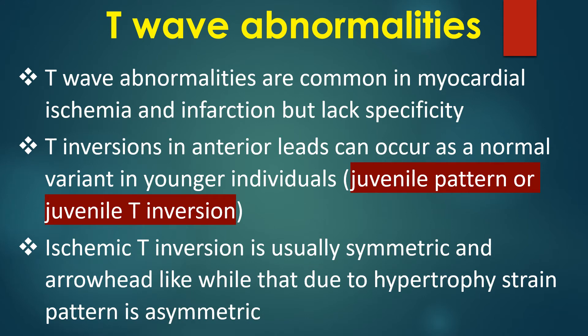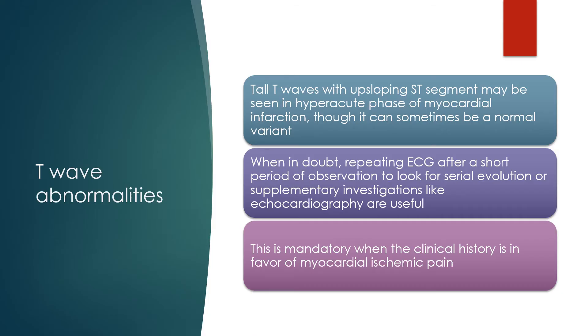T wave abnormalities are common in myocardial ischemia and infarction but lack specificity. T inversions in anterior leads can occur as a normal variant in younger individuals, known as the juvenile pattern or juvenile T inversion. Ischemic T inversion is usually symmetric and arrowhead-like, while that due to hypertrophy strain is asymmetric. Tall T waves with upsloping ST segment may be seen in the hyperacute phase of myocardial infarction, though it can sometimes be a normal variant.